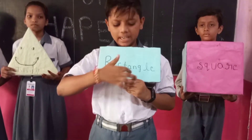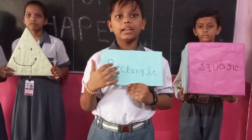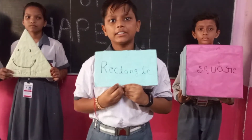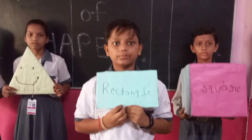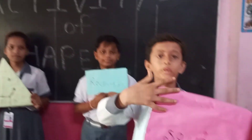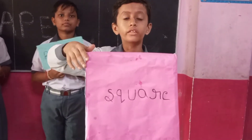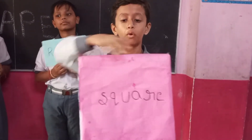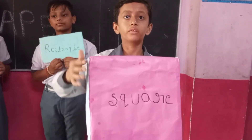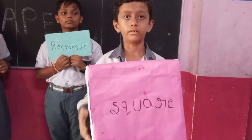I am a square. I have four sides. I have four corners. A square has all sides equal and all sides are straight.